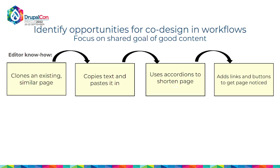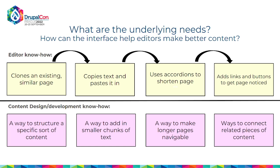Here are four stickies representing a typical sequence: clone an existing page, take a bunch of text — probably hundreds of words from an academic colleague — paste it in, realize the page is too long, go to accordions to shorten it, then think 'I need to get this page noticed, I need to link it, I need a button here.' Looking at that, I thought: what are the underlying needs? Cloning exists because a blank page is the scariest thing ever — what they actually need is a way to structure that particular type of content.